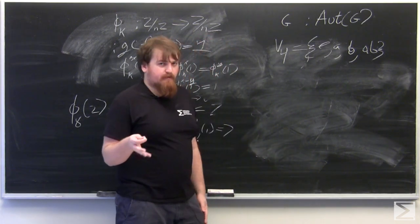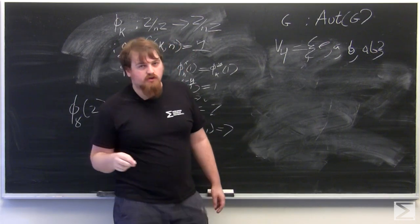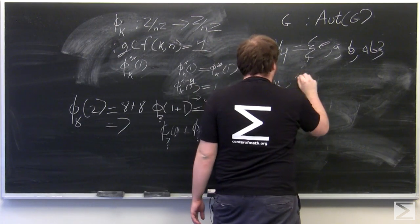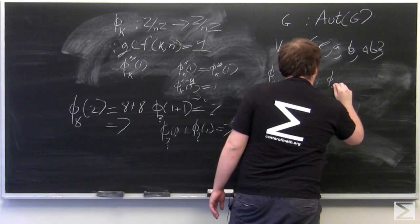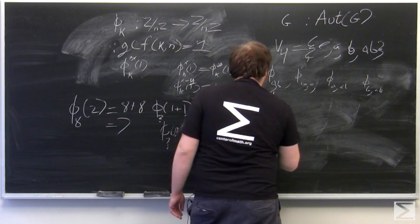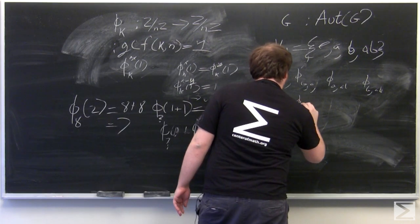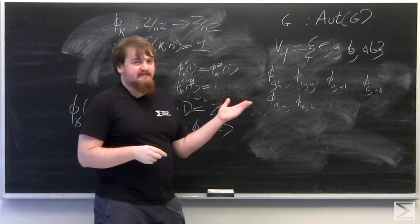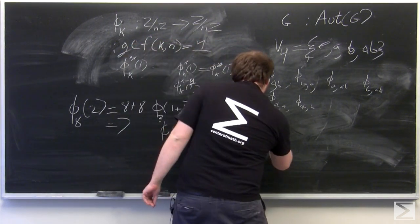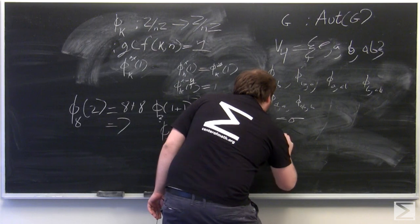So an automorphism of V4 will send A and B to any ordered pair of non-identity elements of V4. So the six automorphisms of V4 will be phi A comma B, phi B comma A, phi A comma AB, phi B comma AB, and two more, where the first element is what A gets sent to by phi, and the second element is what B gets sent to by phi. If we call phi B comma A equals sigma, and phi B comma AB equals rho, let's see if these two elements commute with each other.